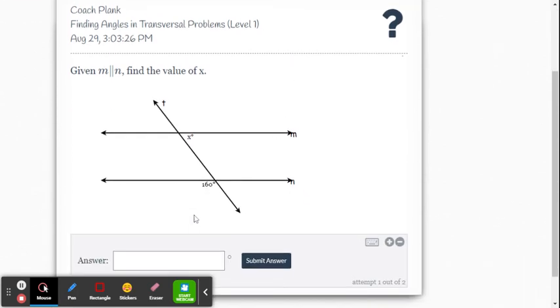This one is kind of like the first one we just did. If I go ahead and put the 160 up here then I know I have same side interior angles and they're supplementary. So it's going to be 180 minus 160. So it's 20 degrees.